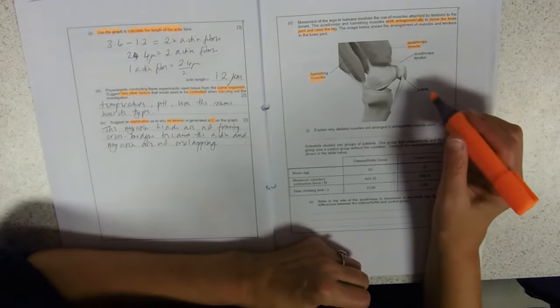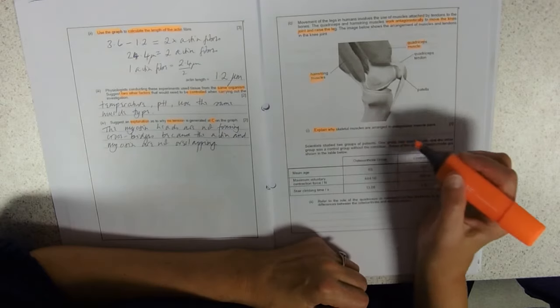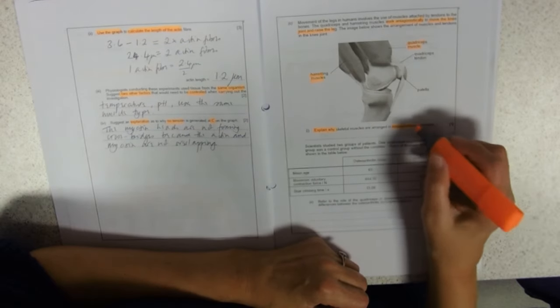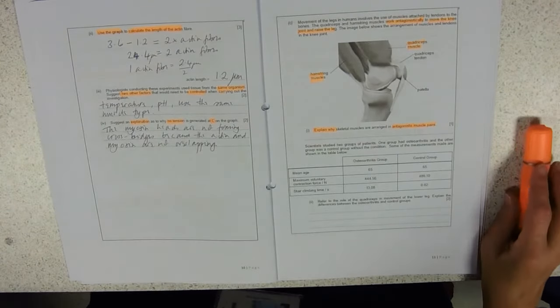We've got the tendons marked on, we've got the knee cap. So first question, explain why we've got antagonistic muscle pairs.